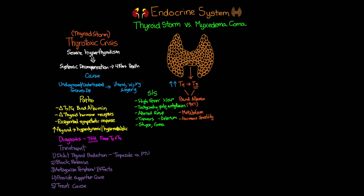To block thyroid hormone release — because antithyroid medications don't have an immediate effect — we give patients some form of inorganic iodine, which blocks the release of T4 from the thyroid. Radiographic contrast can also be used. For patients with an iodine allergy, lithium is an alternative, though it has worse side effects, so iodine remains our first line of choice.